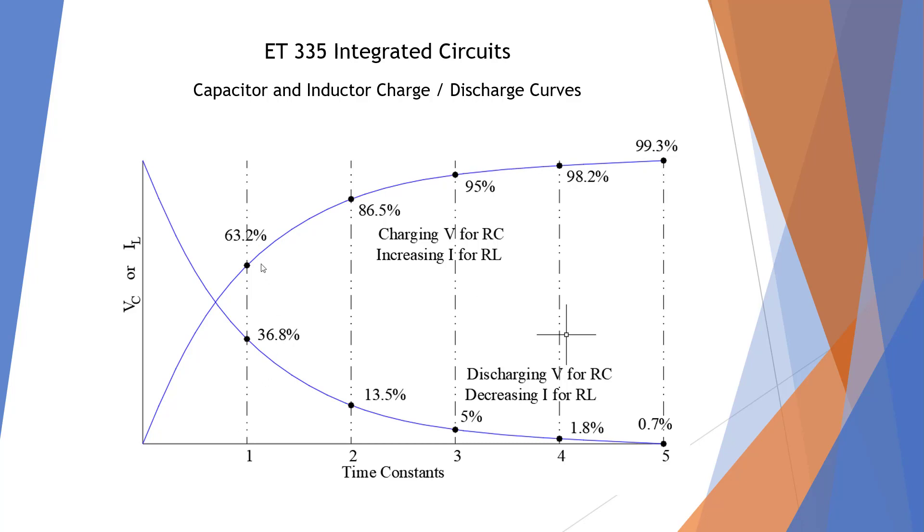So we're going to work our way up from 63% to 99.3%. We're not going to be at 100%, but we're going to be pretty close—it's going to approach that. So we're going to assume that a capacitor is fully charged after five time constants. Knowing this curve, we're going to be able to do some timing circuits and RC circuitry work.